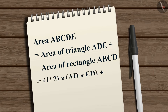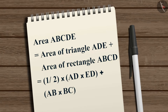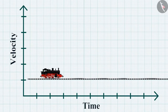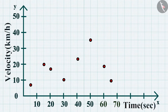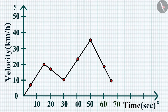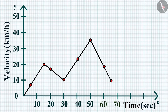The total area equals (1/2) × AD × DE plus AB × BC. Similarly, we can plot the velocity-time graph for a non-uniformly accelerated object, which can have any shape. In such a graph, the current velocity of the object can be less than or greater than its previous velocity, showing that the motion is non-uniformly accelerated.